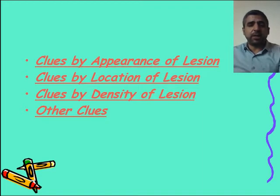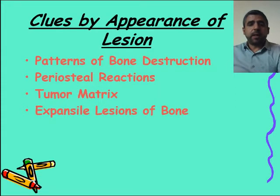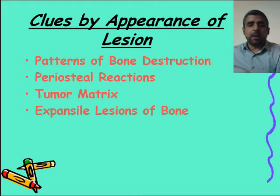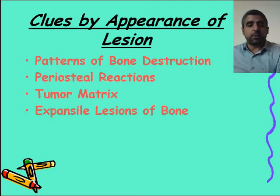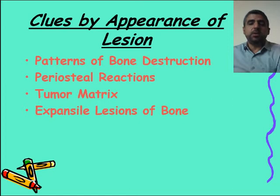Regarding the appearance of the lesion, there are different types. First, you need to look for the patterns of bone destruction, the periosteal reactions — there are different types. You need to look for the tumor matrix: what is the tumor composed of, what is its substance? And you need to look for the expansile nature of the lesion.